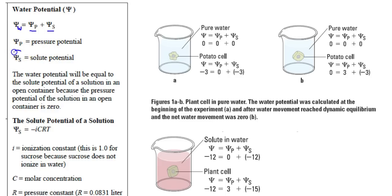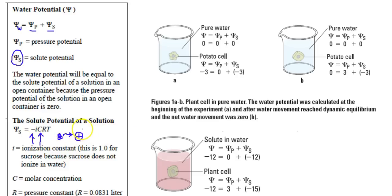Our solute potential will always be negative because solute particles impede the ability of a water molecule to get to a channel protein or an aquaporin. They physically impede it, so it's harder the more you have. Water is also attracted to solute particles, so if there's an opening — an aquaporin — a solute like a sodium ion can get in its way, making it hard for water to overcome that attraction and reach the opening.